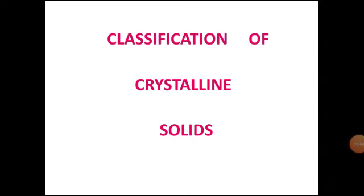Good morning students. Last class you have already studied about solids, properties of solids, and classification of solids. The solids can be classified into two types on the basis of the arrangement of constituent particles: amorphous and crystalline solids. Today we are going to study about the classification of crystalline solids.